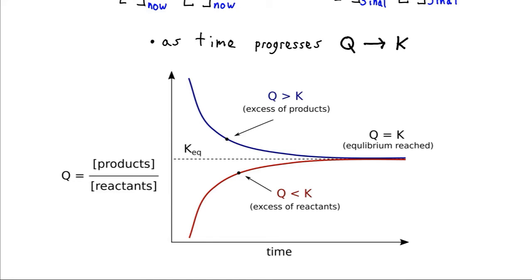If, however, we have an excess of products, then Q will be larger than the equilibrium constant. And so what has to happen then is that the amount of products needs to decrease and the amount of reactants needs to increase, so that Q will diminish and eventually approach a value of K.